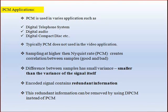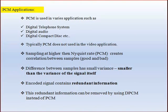The quantization noise introduced in the transmitter is carried all the way to the receiver output. This noise is signal dependent in the sense that it disappears when the message signal is switched off. In PCM, the resulting sampled signal has high correlation between adjacent samples, meaning the difference between adjacent samples has a variance smaller than the variance of the signal itself. When these highly correlated samples are encoded, the resulting encoded signal contains redundant information.